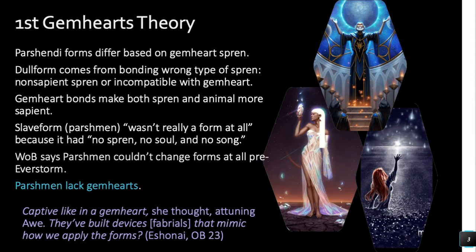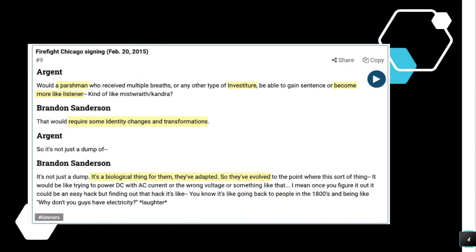I've presented this theory before, and the argument was made that it makes them biologically different from the Parshendi. But according to Brandon, they actually are biologically different. Someone asked if a Parshman was given some sort of investiture — like multiple breaths — would they be able to become sentient and more like a listener? Brandon says no, that would require identity changes and specifically biological transformations, because they've adapted and evolved away from whatever the Parshendi have that allows them to transform. And what did the Parshendi have? A Gemheart.